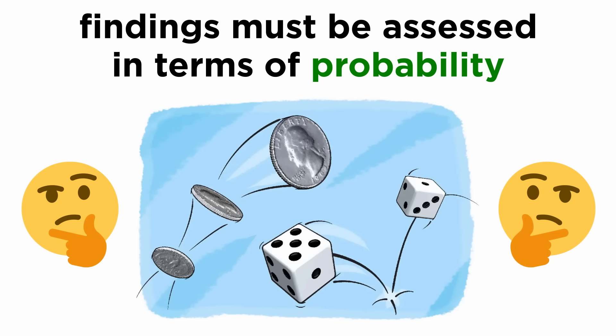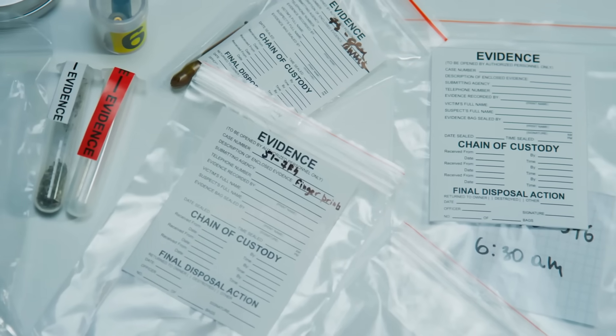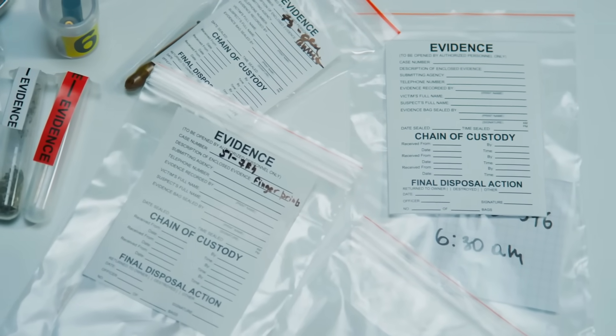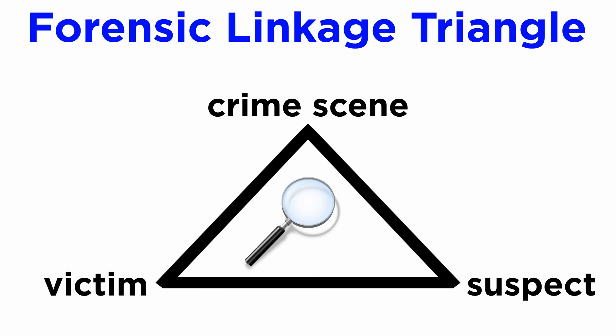However, the defense council often misunderstands probability and considers it as a tool to plead not guilty due to a perceived lack of definite opinion. This is why investigation should never be limited to singular evidence. As much evidence as possible should be recovered and analyzed from the triangle—crime scene, victim, and suspect—because it strengthens the case for identification in terms of probability with each piece of evidence.